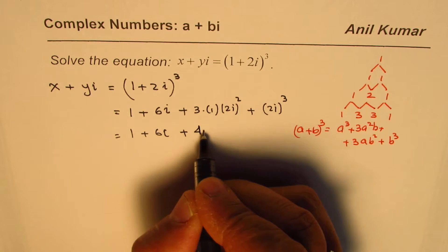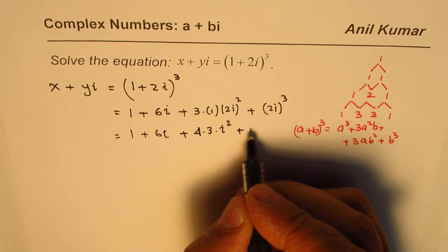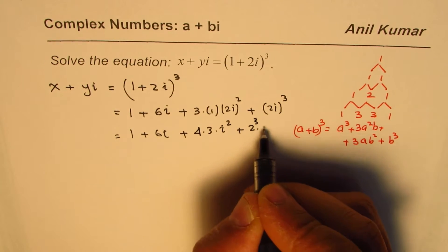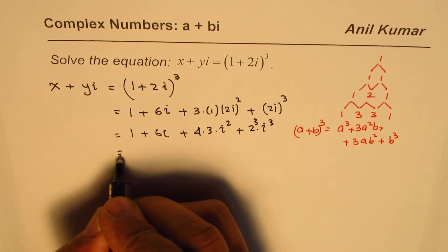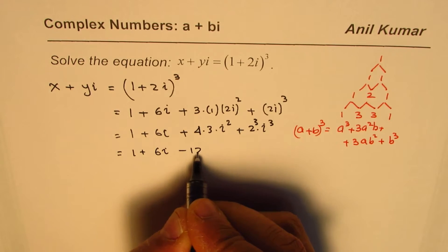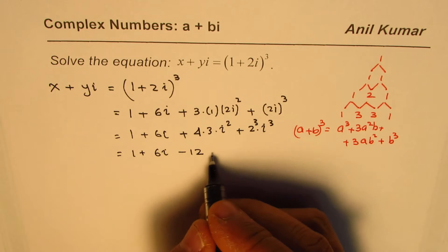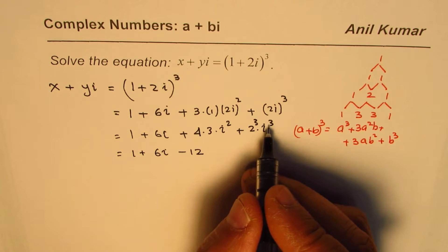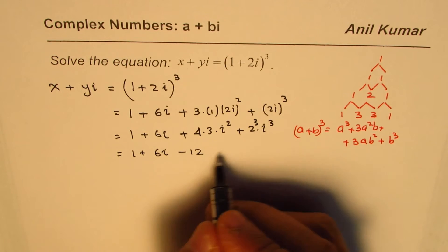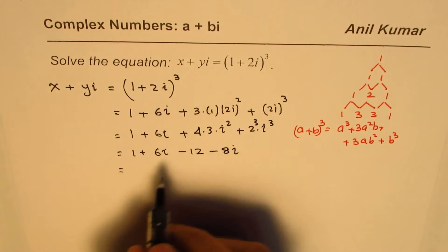4 times 3 and this is i², plus 2³i³. So it gives us 1 plus 6i, i² is negative 1, so it is -12 - 8i.